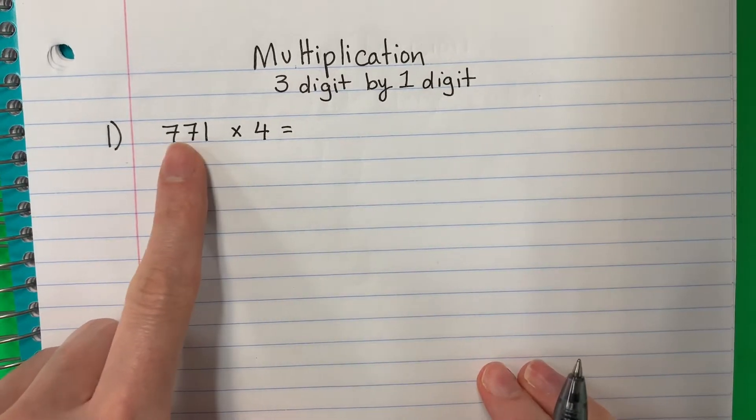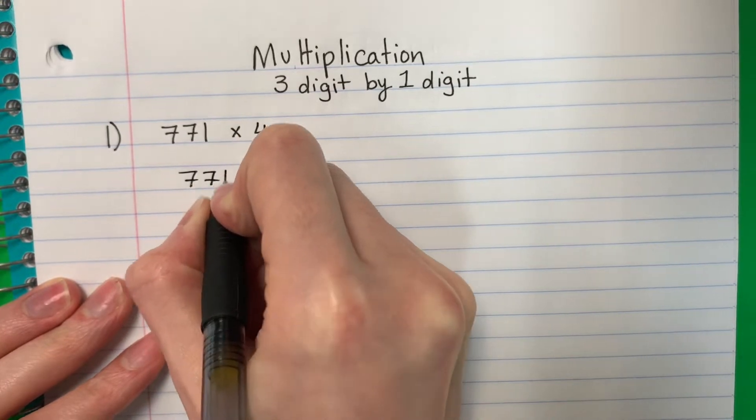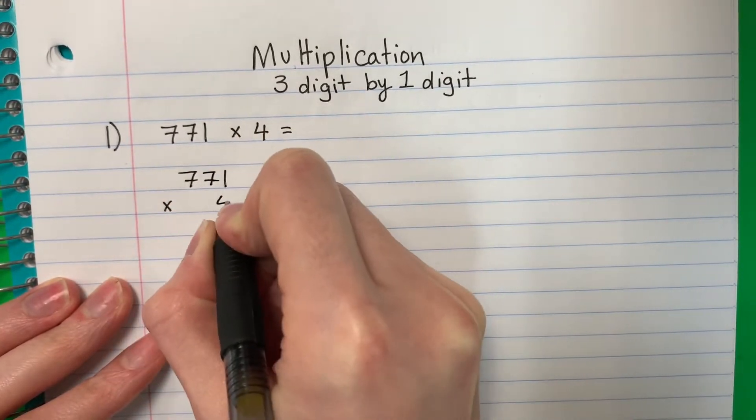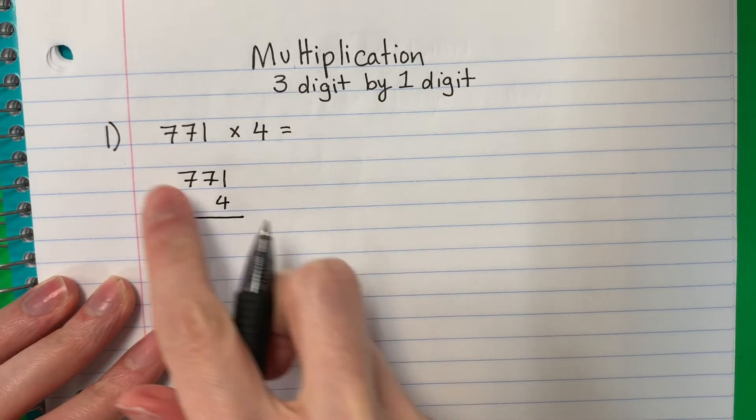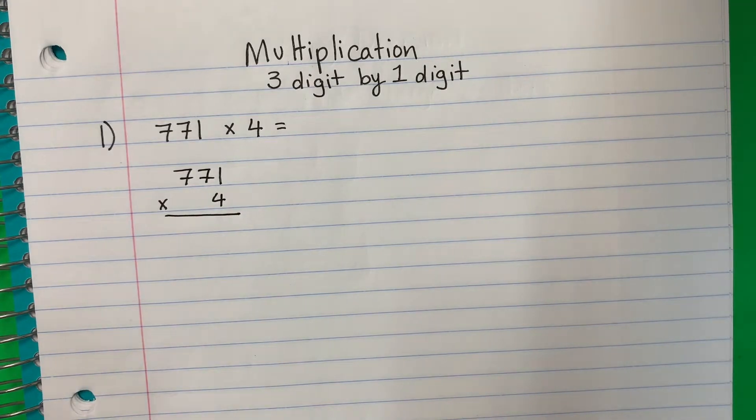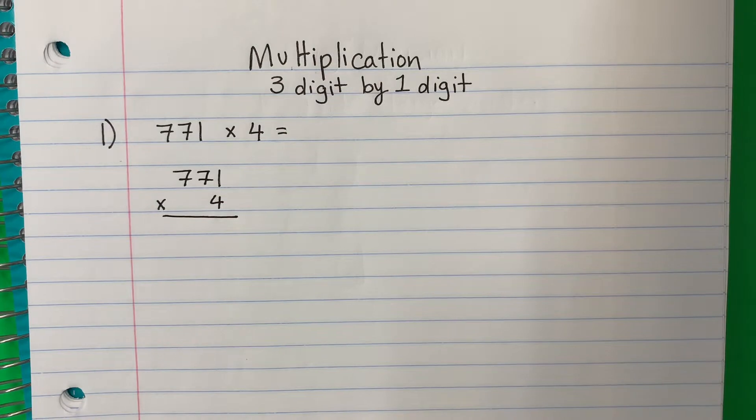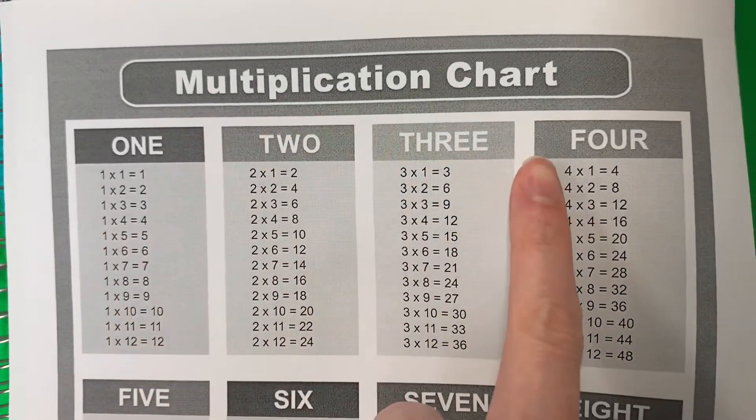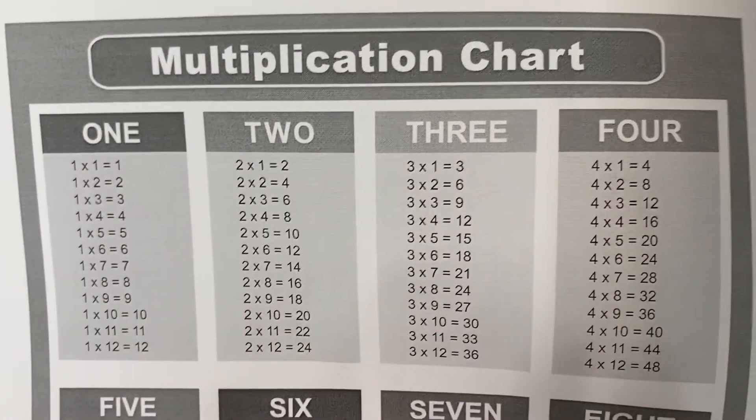Okay, so if you have something that looks like this, you will need to rewrite it to look like this. Si tienes una ecuación así, necesitan escribir otra vez, pero así. Alright, so let's go ahead and do this. We are going to do this without a calculator. Vamos a hacer sin calculadora. So we will be using our multiplication chart that you have. Vamos a usar esta tabla que ya tienen.